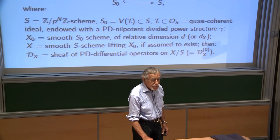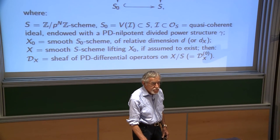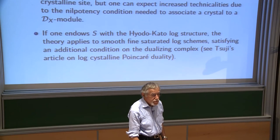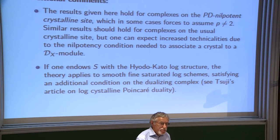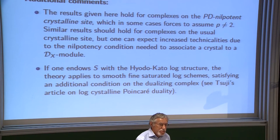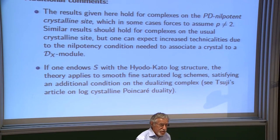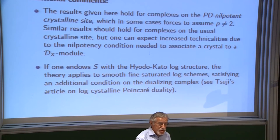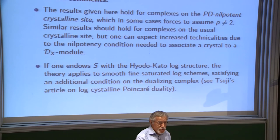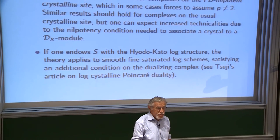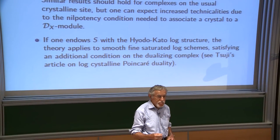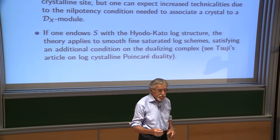The canonical log structure is the pullback from the ring of Witt vectors to k, and then you go to W_N(k) by the Teichmüller map. This gives the log structure.